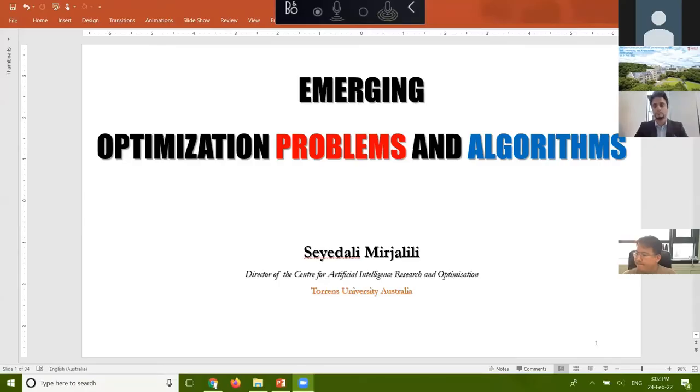Professor Mirjali is a senior member of IEEE and an associate editor of several journals, including Neurocomputing, Applied Soft Computing, Advances in Engineering Software, Computers in Biology and Medicine, Applied Intelligence, and IEEE Access. His research interests include robust optimization, engineering optimization, multi-objective optimization, swarm intelligence, evolutionary algorithms, and artificial neural networks. He is working on the application of multi-objective and robust metaheuristic optimization algorithms as well.